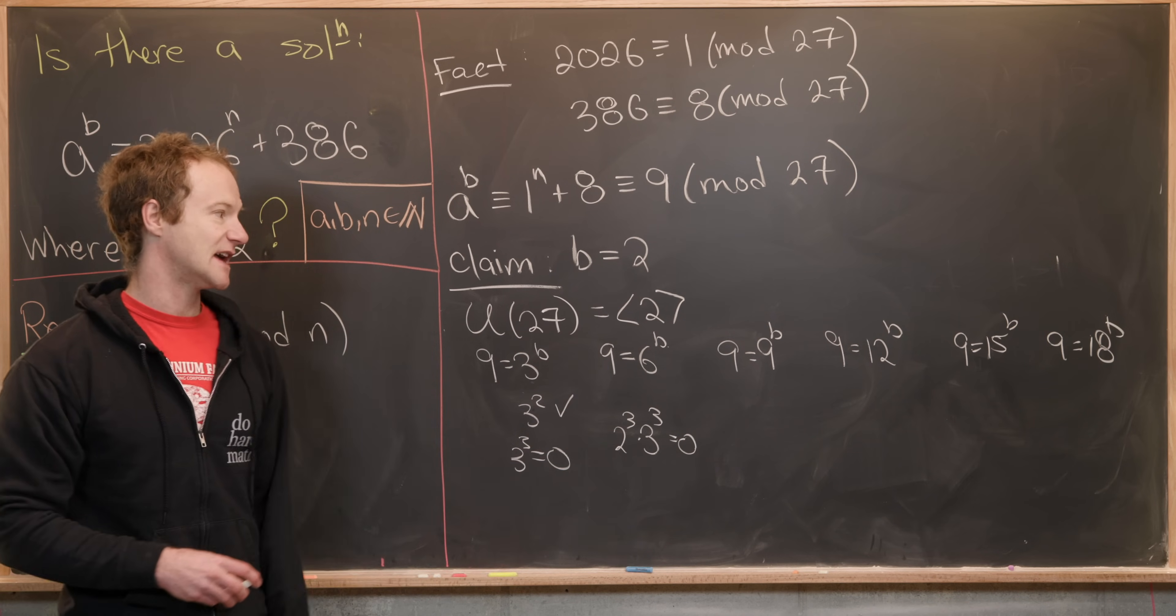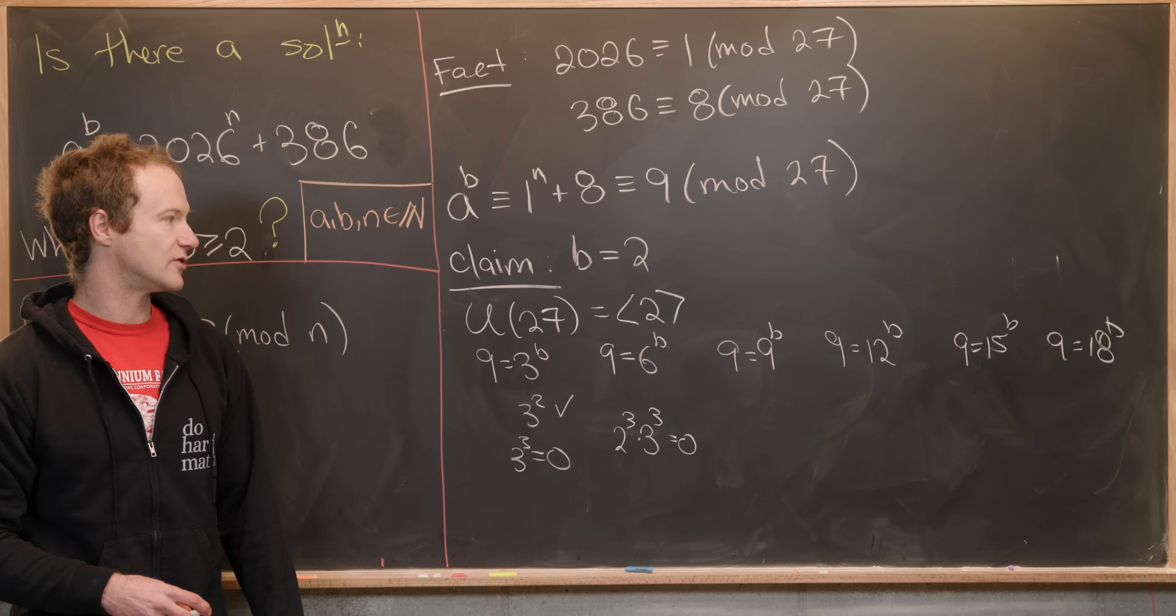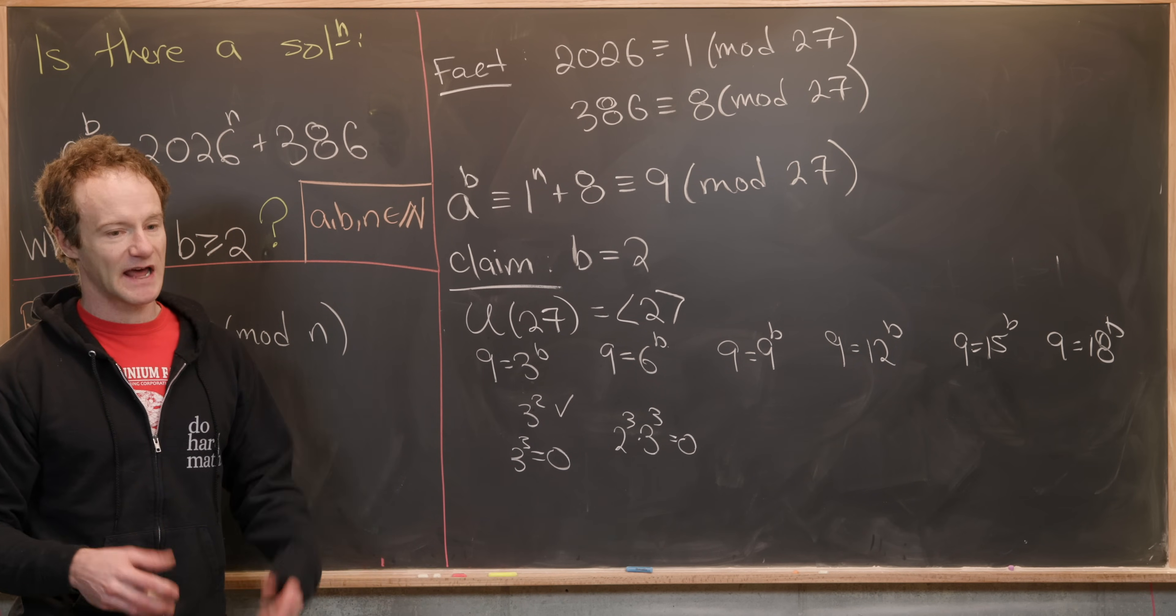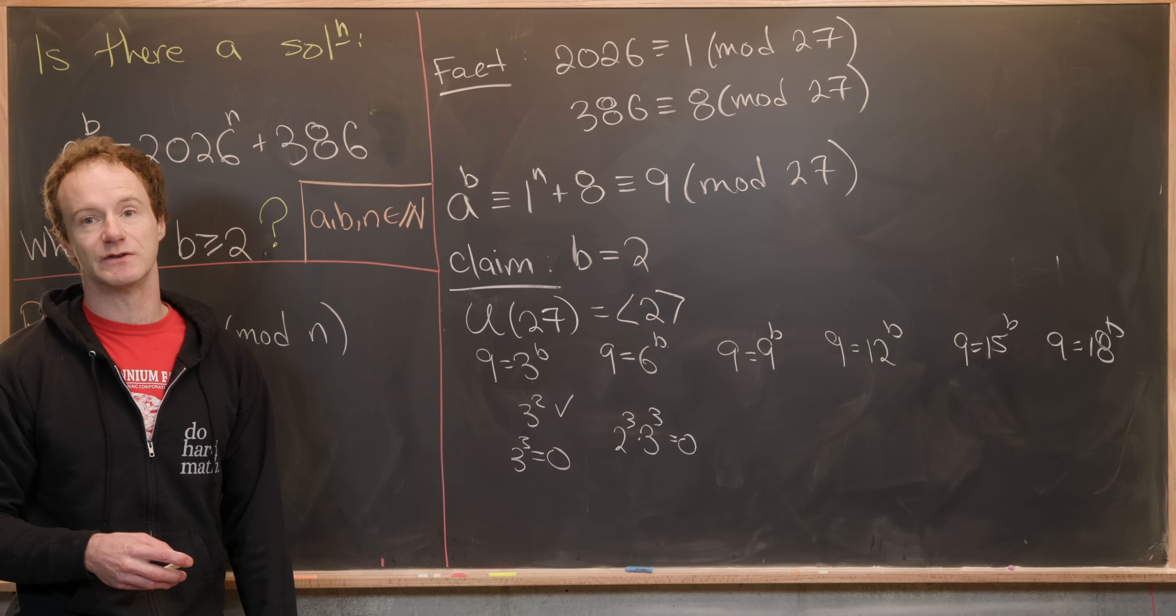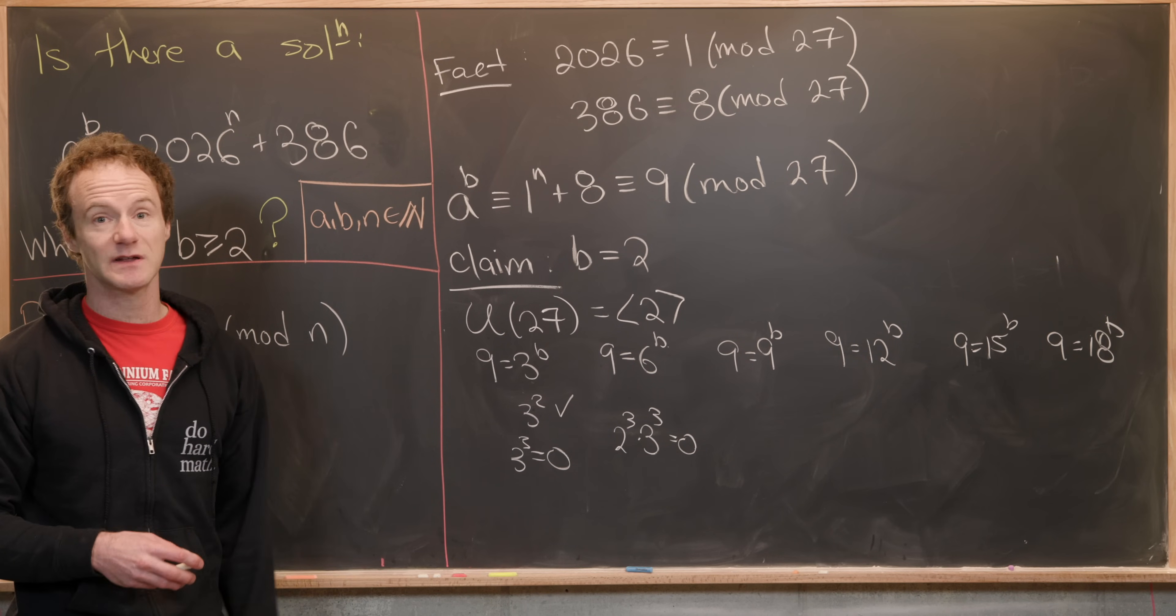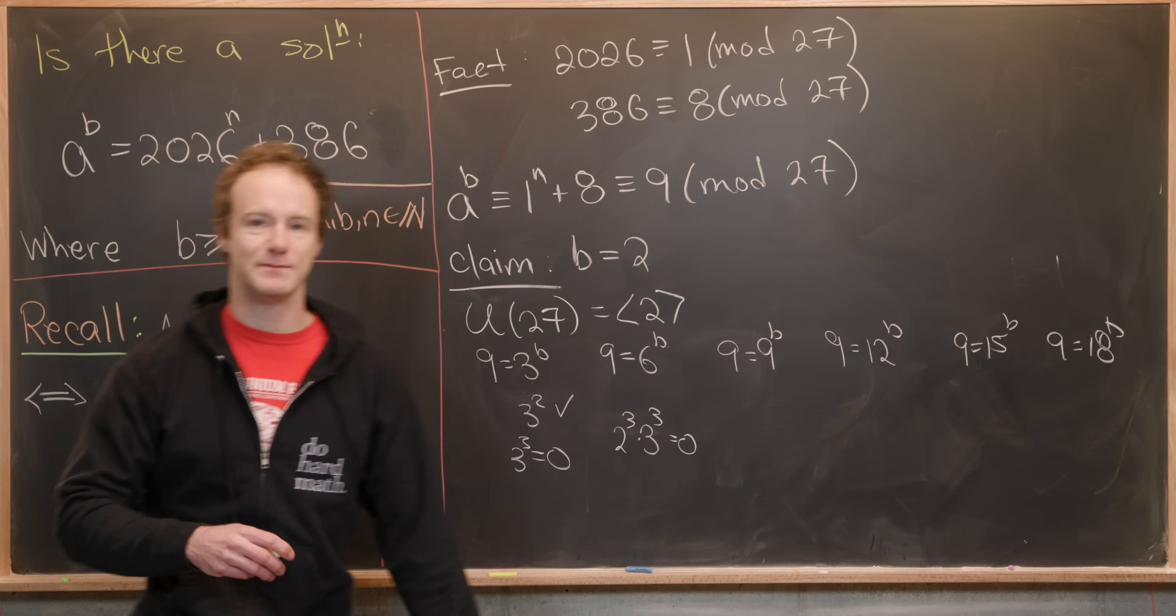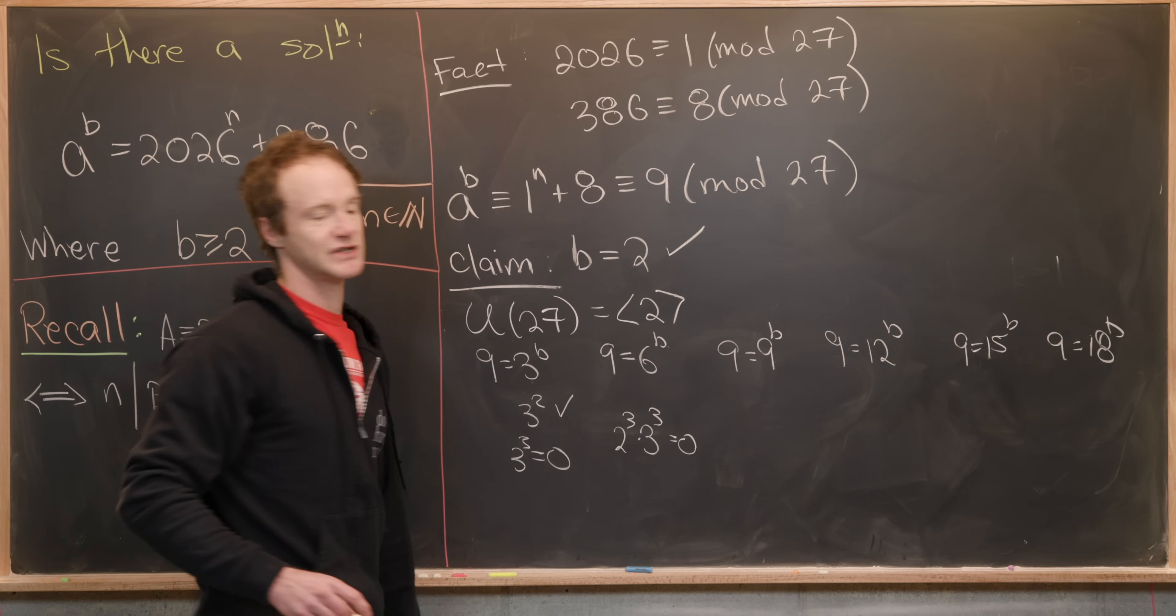And in fact this kind of setup is going to happen for all of these numbers because all of these numbers have a multiple of 3 inside of them. So when you raise them to an exponent that is ≥ 3 you will get something that is ≡ 0 (mod 27). Which leaves us with only two possibilities: b is 1 or 2. But we started off assuming that b ≥ 2. So that means b has to be equal to 2.